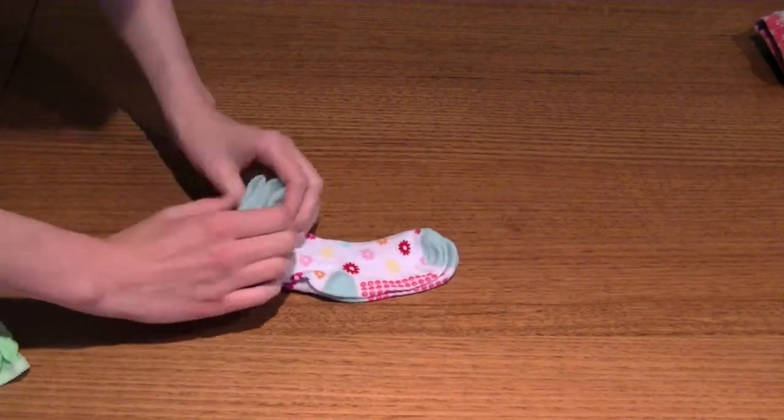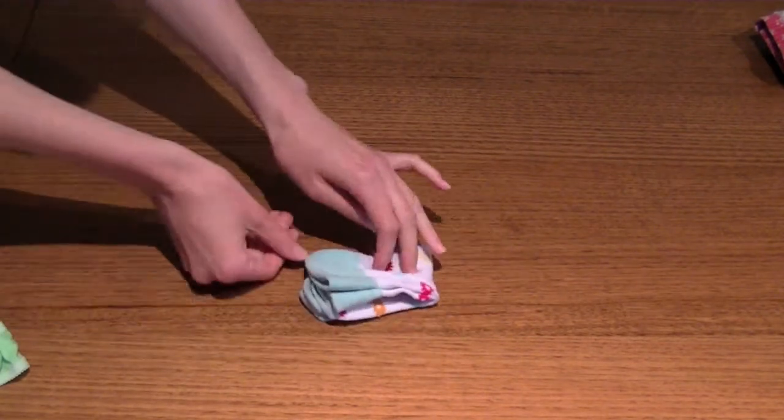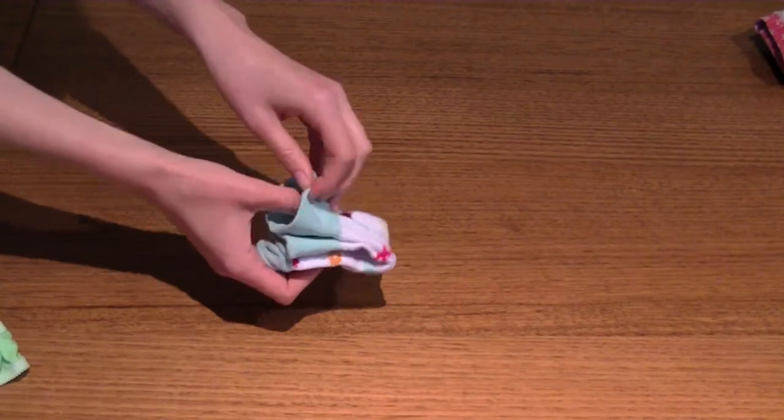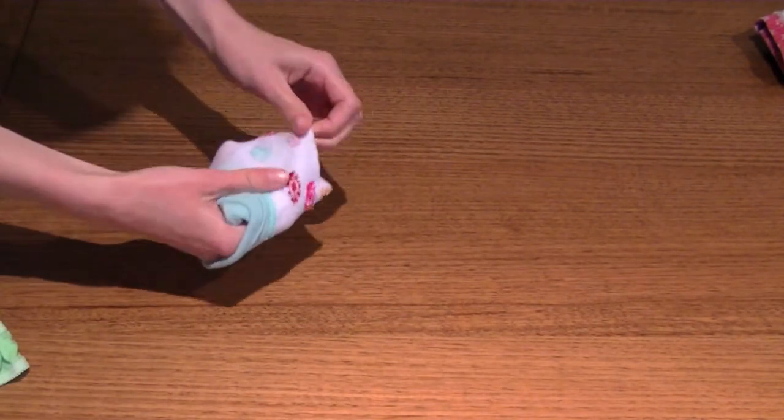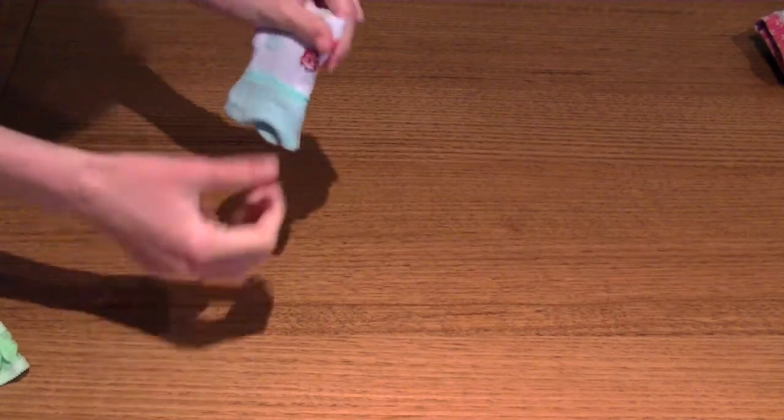For small socks, simply place one sock on top of the other and fold in half. Take the band and gently stretch it around the sock and use your fingers to flatten it out.